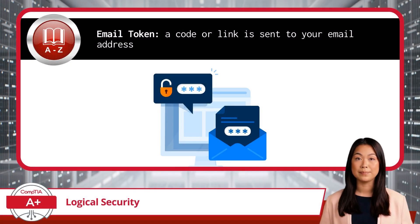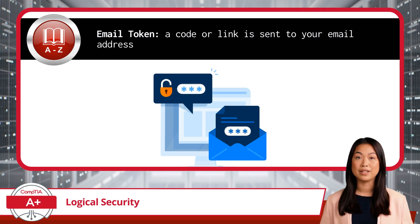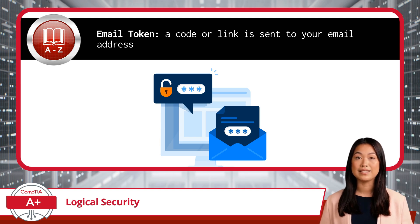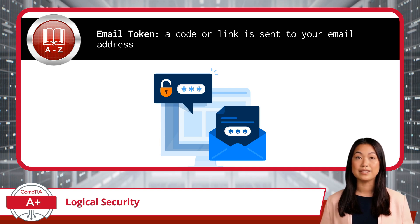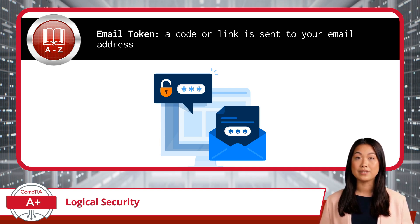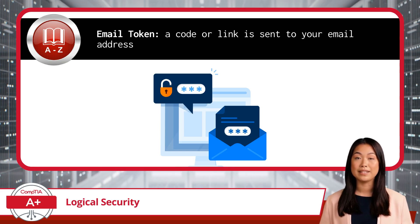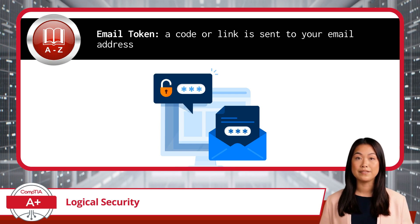One such MFA method in use today involves email tokens. With this option, a code or link is sent to your email address as a second step in verifying your identity. After entering your password, you receive an email containing a unique, time-sensitive code or a link that you must use to complete the login process. This added layer of security is crucial because even if an attacker knows your password, they would also need access to your email account to gain entry, making unauthorized access significantly more difficult.